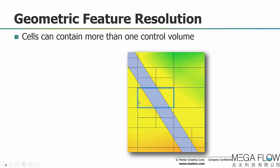When Flowtherm XT encounters a cut cell, it splits that computational grid cell into multiple regions. One control volume will be solid and shaped as the geometry is shaped — no longer Cartesian. On each side there is a fluid cell. So that one computational grid cell is split into three separate control volumes, accurately capturing the shape of the geometry.